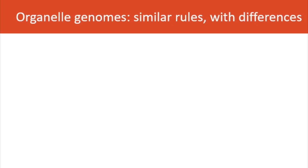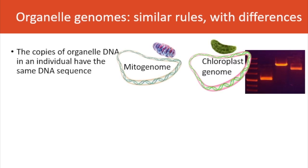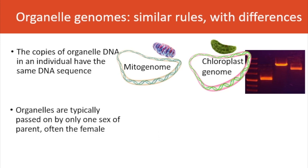Organelle genomes follow similar rules to those for nuclear genomes, with a few differences. The copies of organelle DNA in an individual all have the same DNA sequence — true of both the mitogenome and the chloroplast genome — so visualized on a gel, we would see only one band per individual, not two. Organelles are also typically passed on by only one sex, and this is often the female, which is very often true in animals and in flowering plants.